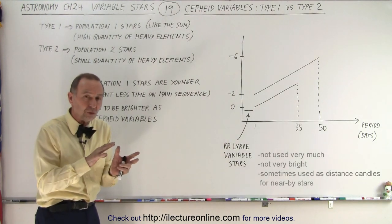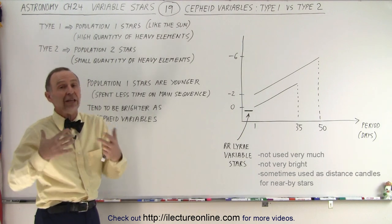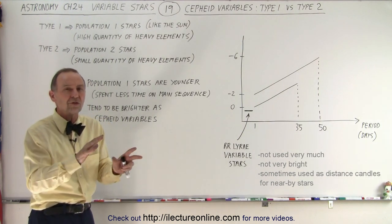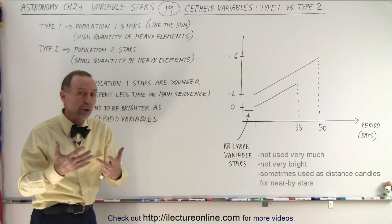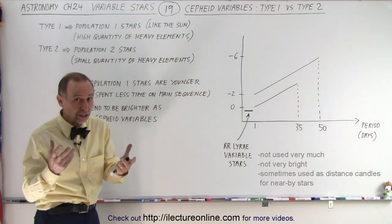So population 1 stars, which are younger, tend to have more of the heavy elements. Population 2 stars, which are older stars, tend to have far fewer of those heavy elements. And there's a distinct difference between them.